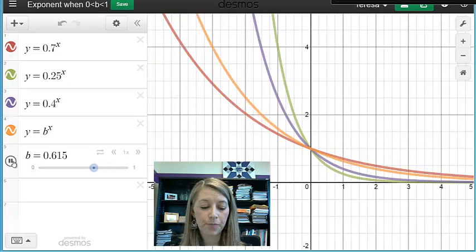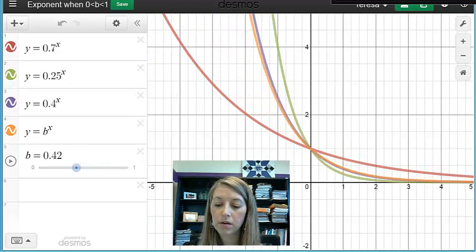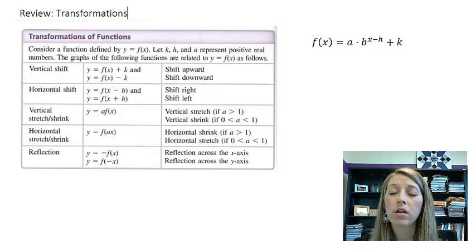So we've seen the shape of all of these graphs here. Now we're going to talk about how all of these graphs can be tweaked, meaning how can all of them be transformed. So we learned the transformations of graphs. We can shift them, we can stretch them, we can shrink them, we can reflect them. All of that information applies true for exponential functions just like it did for polynomial functions.